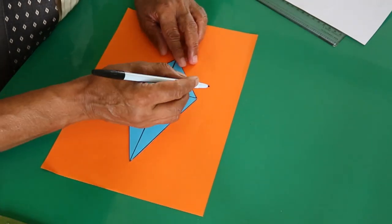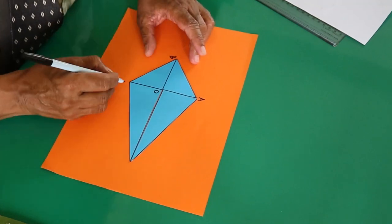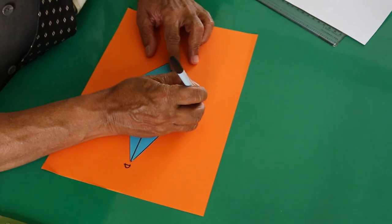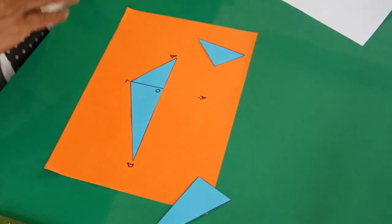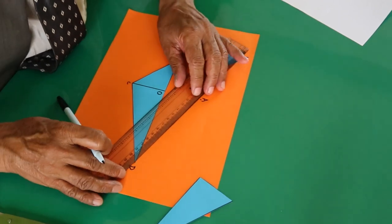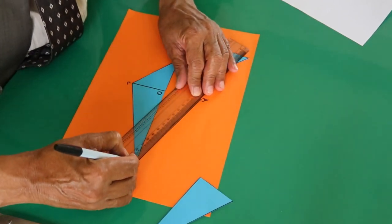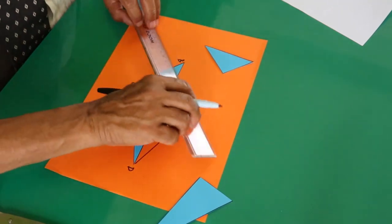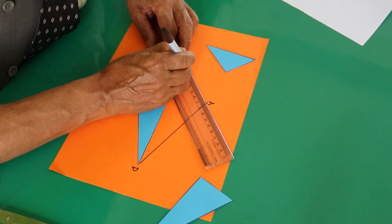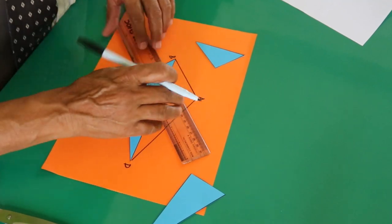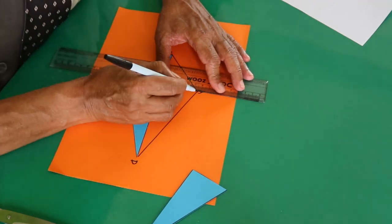I have to write A here, B here, C here, and D here. Look at the point A over here, and you can join with the ruler.